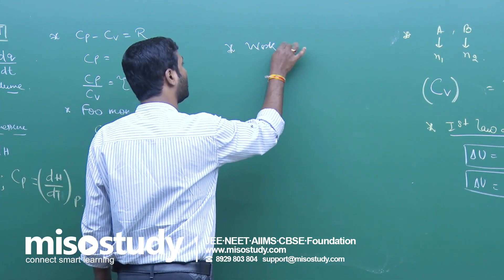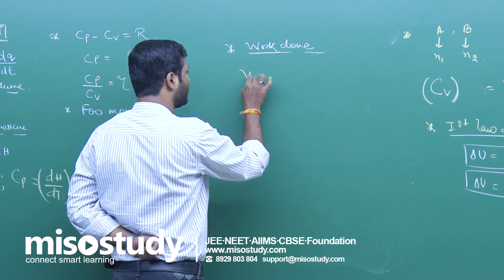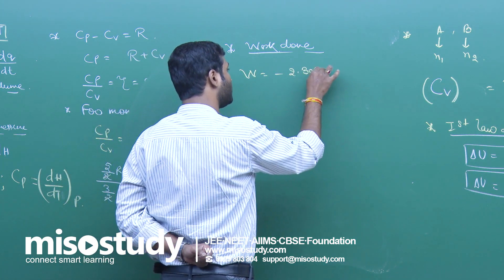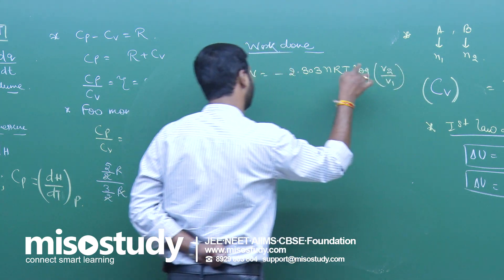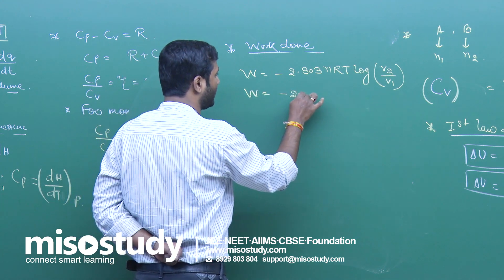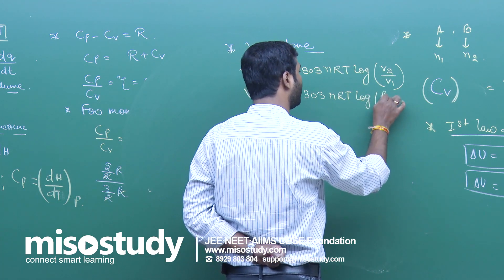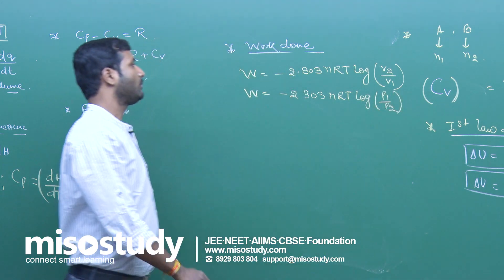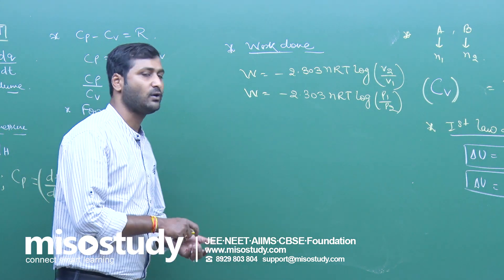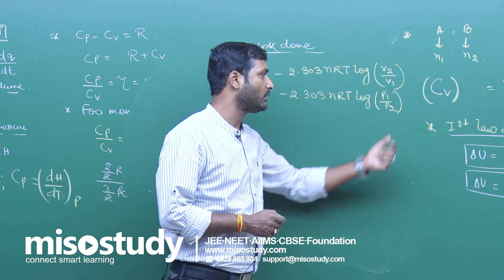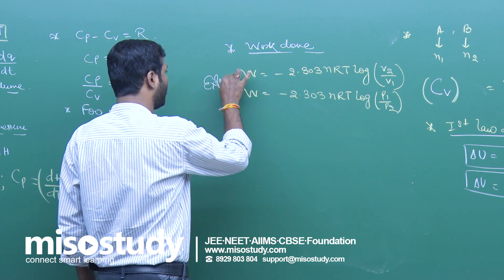Work done in isothermal reversible expansion: w is equal to minus 2.303 nRT log(V2/V1), or equivalently w equals minus 2.303 nRT log(P1/P2), because by Boyle's law P1/P2 equals V2/V1.